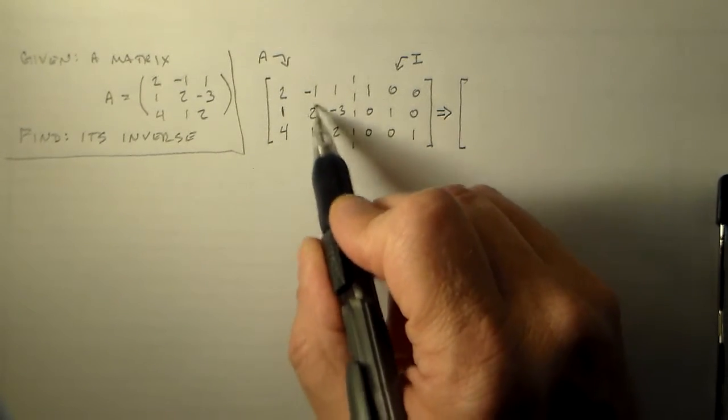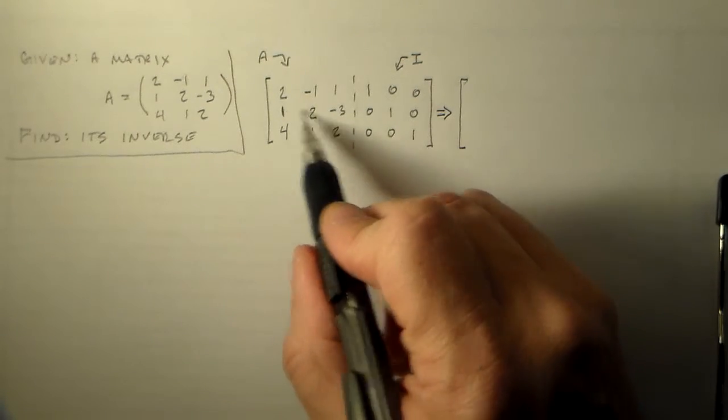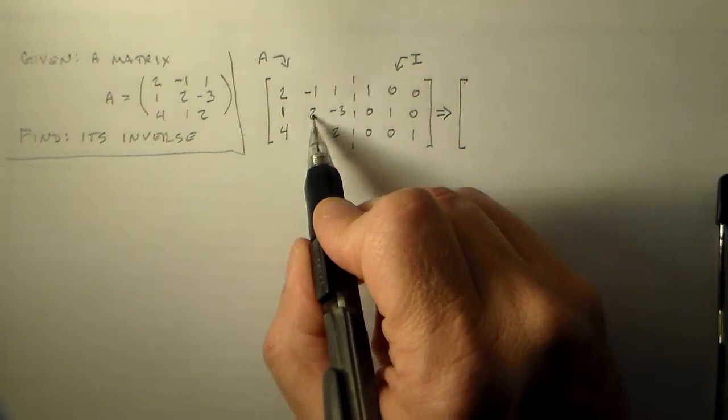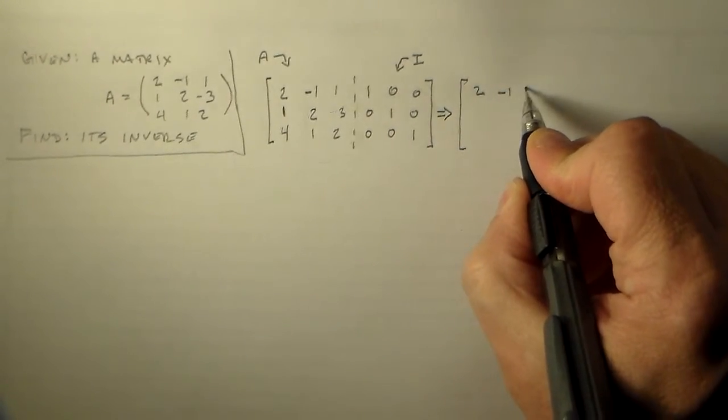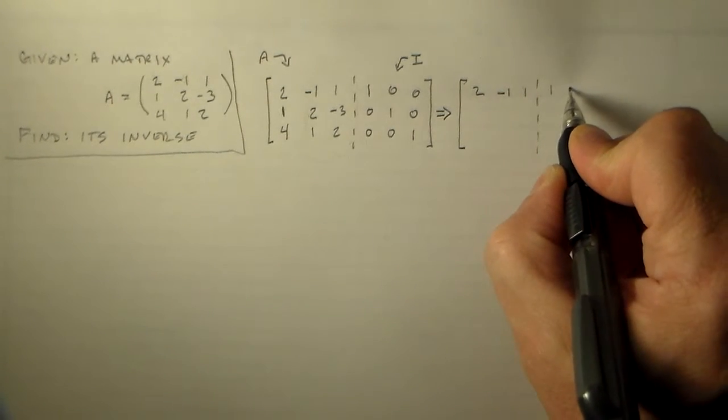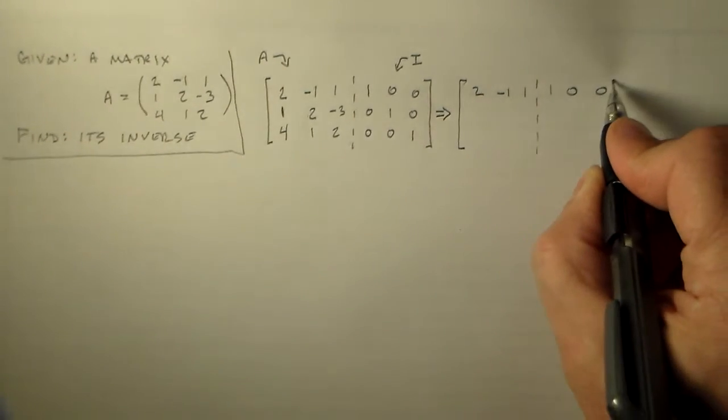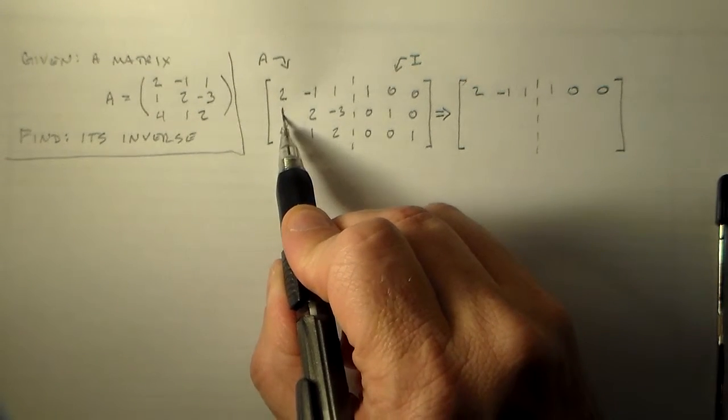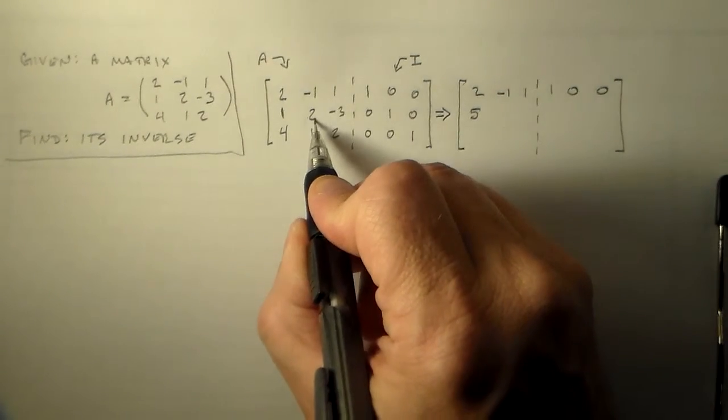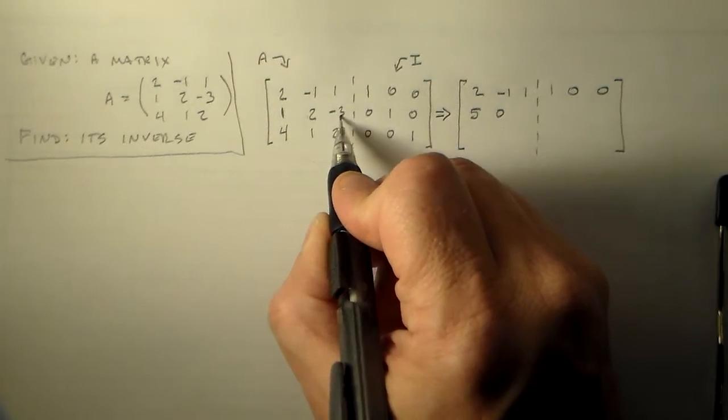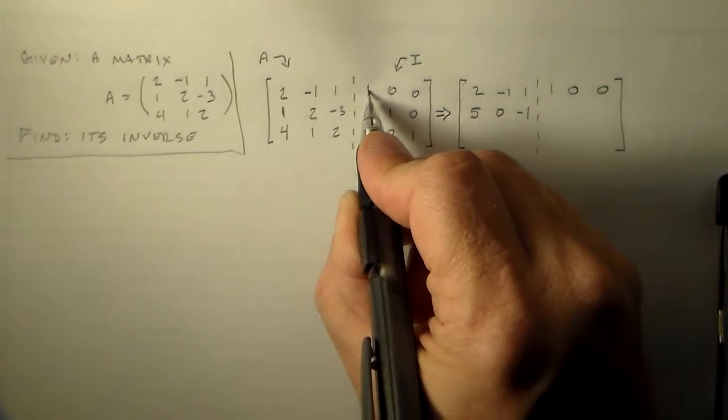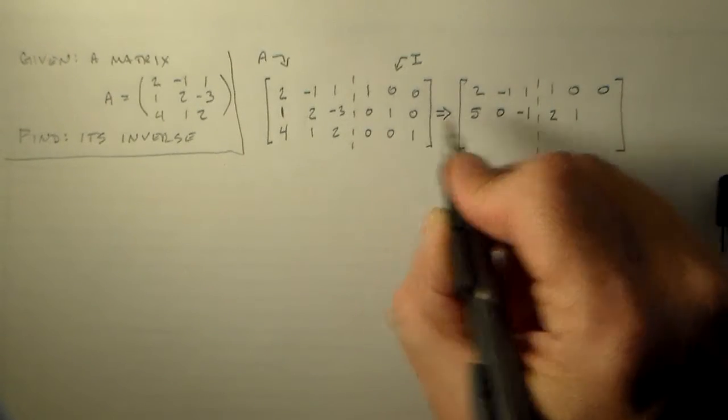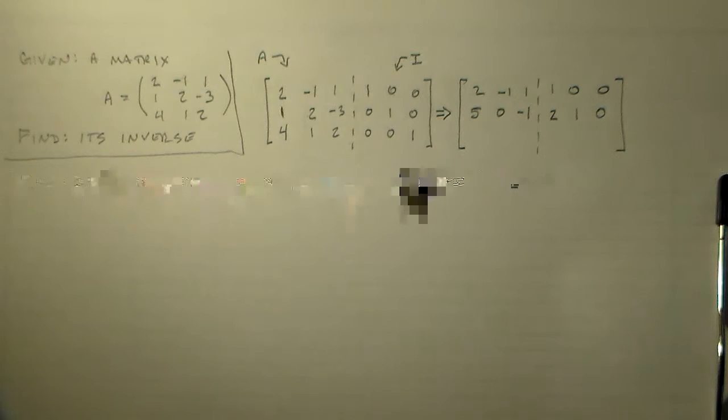So normally what we'd do previously to solve those equations is we'd blank out something. So I'm going to use this minus 1 to get rid of the central values for these two rows. And while we do that, we add in all the other things. So if I add in 2 times this over here, then I'll be able to get rid of this 2. So I'd have like 2 times 4 plus 1 is 5, 2 times minus 1 is minus 2 plus 2 is 0, 2 times 1 is 2 plus minus 3 is minus 1, 2 times 1 is 2 plus 0 is 2, 2 times 0 is 0 plus 1 is 1, 2 times 0 plus 0 is 0. Just like that, nice and simple.